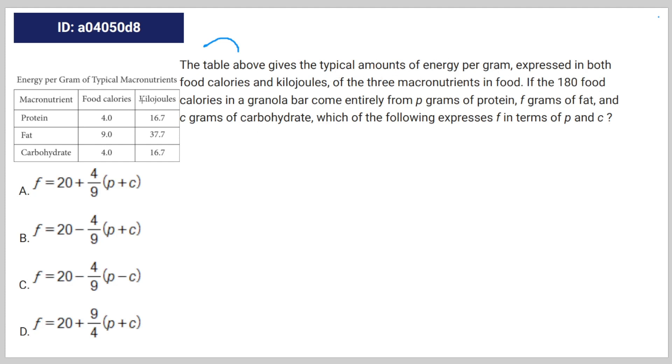So not kilojoules, and a granola bar comes entirely from p grams of protein, f grams of fat, and c grams of carbohydrates, which of the following expresses f in terms of p and c? So we just have this random constant here.